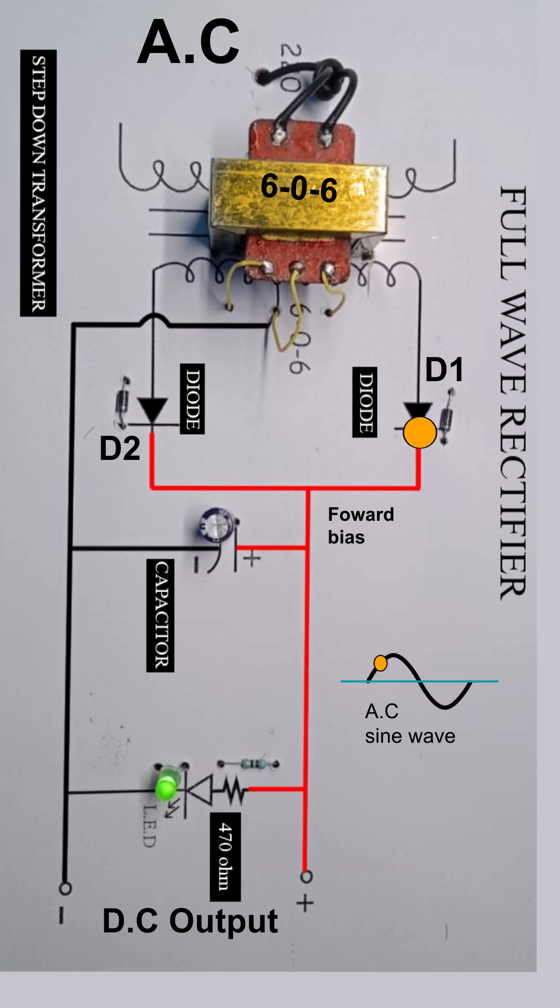Thus in a full-wave rectifier, DC voltage is obtained for both positive and negative half cycle.